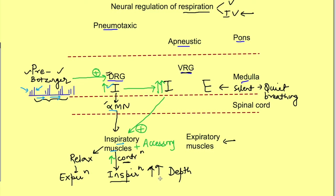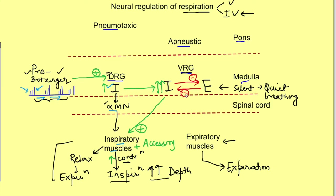When there is an increase in rate and depth of respiration, forceful expiration is also needed. Relaxation of inspiratory muscles is not sufficient; the expiratory muscles must also contract. This occurs because the inspiratory neurons of the ventral respiratory group are connected to the expiratory neurons by mutual inhibition — inspiratory neurons inhibit expiratory neurons and expiratory neurons inhibit inspiratory neurons. But expiration has not yet started here; we have only discussed how increased depth of inspiration occurs, not how the switch to expiration happens.